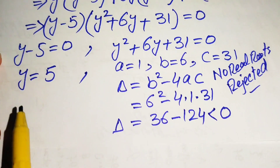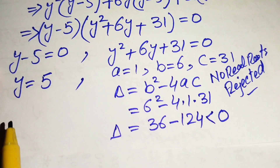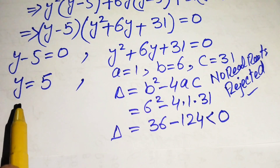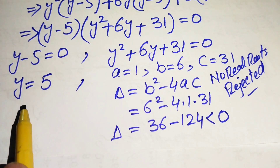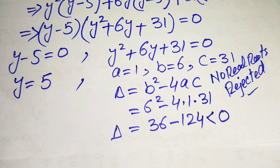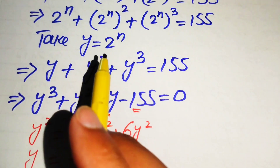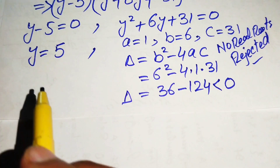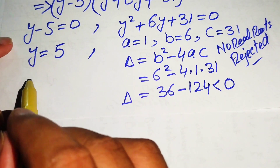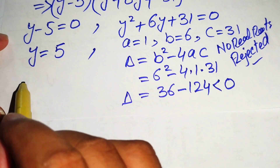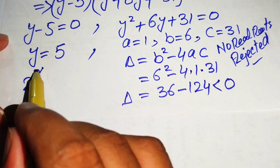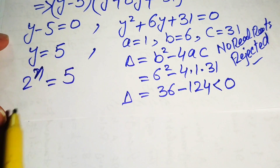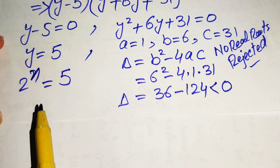We proceed with Case 1 only, where y equals 5. Back-substituting using y equals 2 to the power of n, we get 2 to the power of n equals 5.